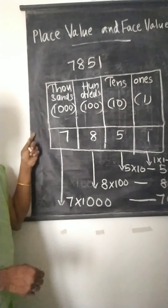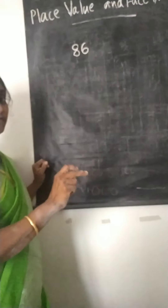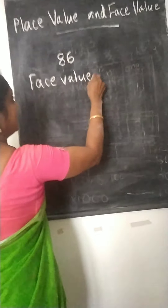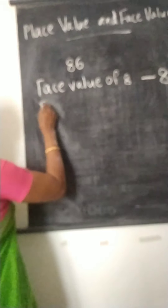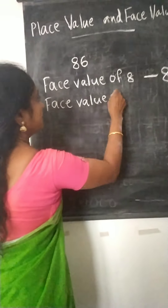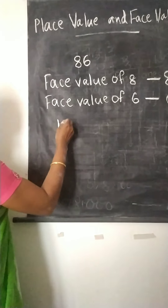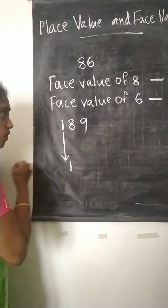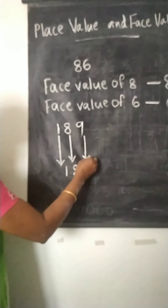Now we can study about face value. Here is the number 86. Face value is the value of the digit itself. Therefore, the face value of 8 is 8 itself — it is the same as the digit itself. And the face value of 6 is 6 itself. We can do another example: 189. The face value of 1 is 1, face value of 8 is 8 itself, and face value of 9 is 9 itself.